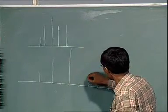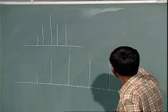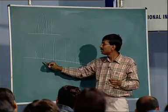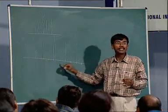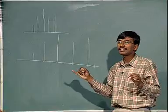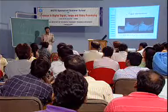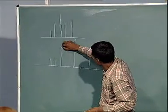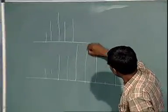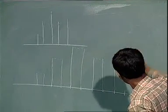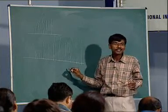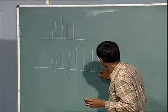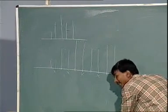Essentially one wants a signal at double the resolution — double the number of sampling points. But we want to find out what is happening at these intermediate points. One method is pixel duplication — also called zero order hold — essentially one is duplicating the value at a given point. So one has another image at double the resolution, but there is no new information at these intermediate sampling points.